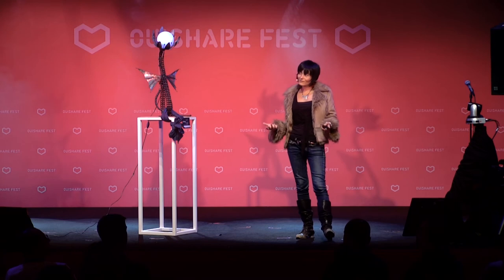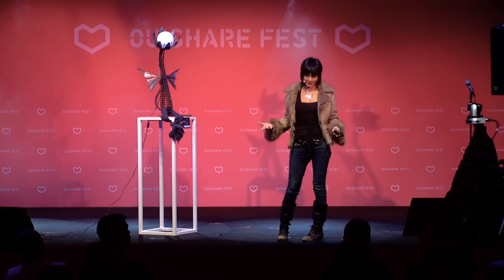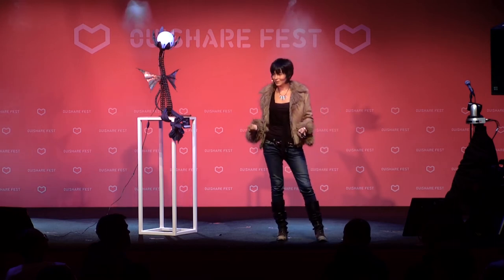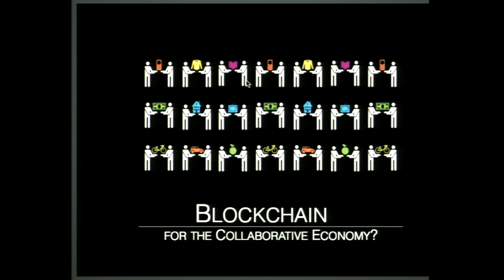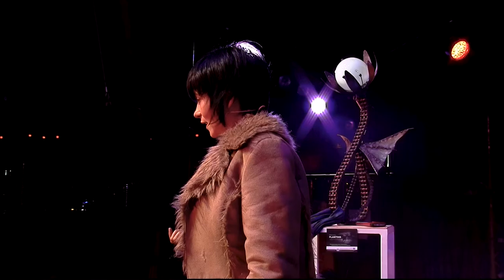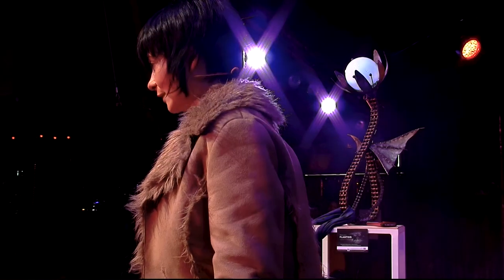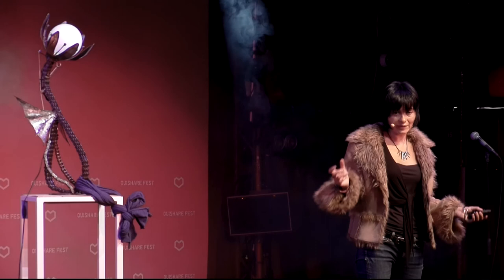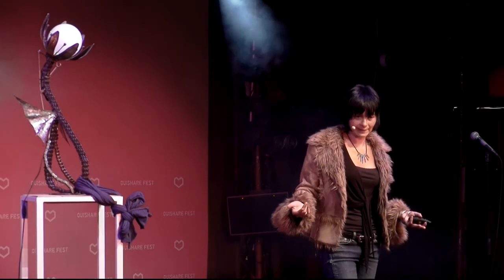The closest thing we have to a decentralized governance model is actually the free market. But as we all know, the market can actually quite easily be manipulated by powerful actors, and it might not always lead to the most effective outcome for a democratic society. This brings back the question as to whether the blockchain can actually provide the necessary infrastructure to enable a real collaborative economy by eliminating the figure of the middleman or intermediary and enabling people to cooperate in a much more decentralized manner.